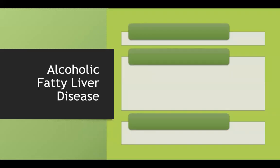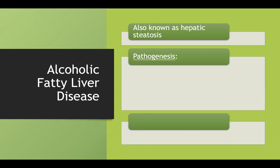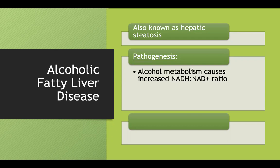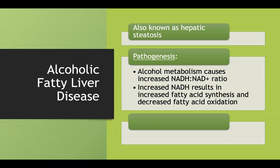Alcoholic fatty liver disease, also called hepatic steatosis, involves fat deposition that usually begins in zone 3. The pathogenesis is that metabolizing alcohol increases your NADH to NAD+ ratio, and when you have all this NADH, it changes your reaction mechanism toward increased fatty acid synthesis and decreased fatty acid breakdown or oxidation.